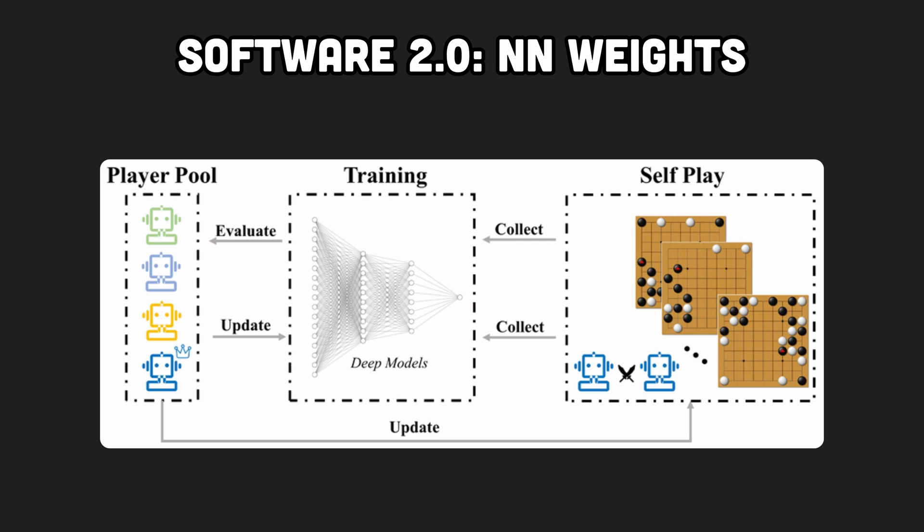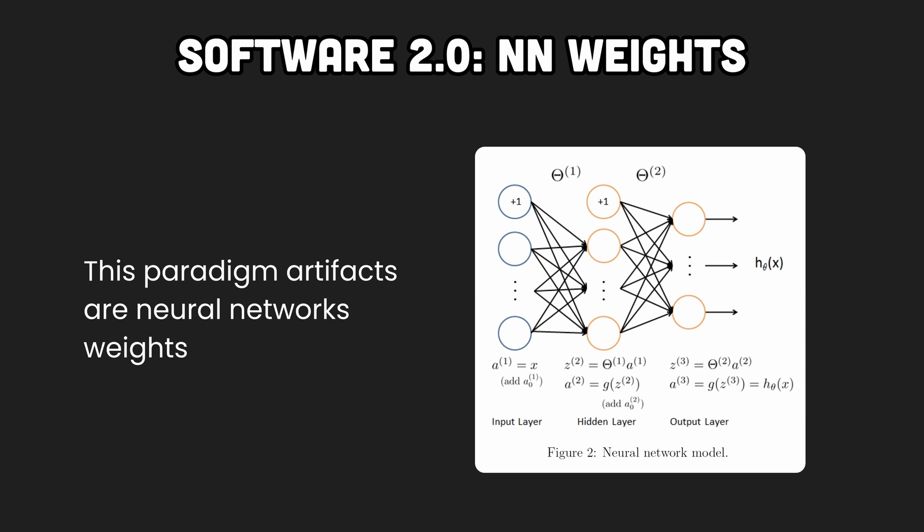For instance, AlphaZero became superhuman at Go without any human domain knowledge, but solely through data generated by playing against itself. These paradigm artifacts are neural network weights — the output of the learning algorithm.